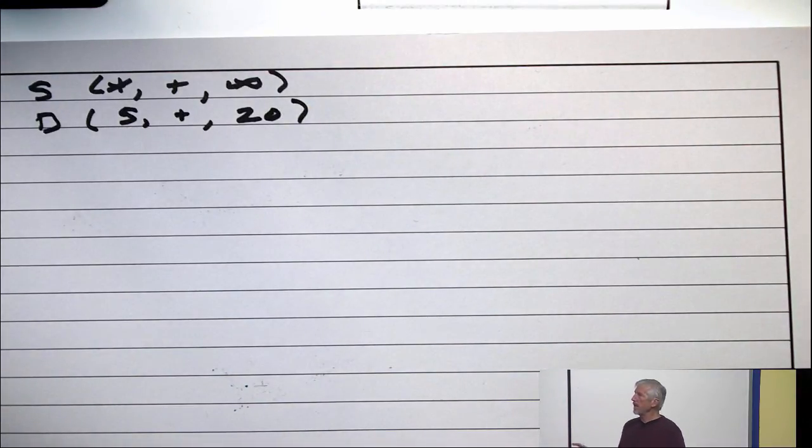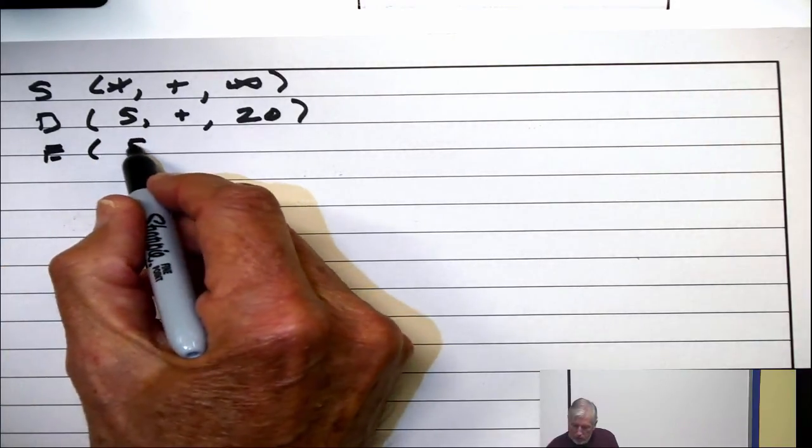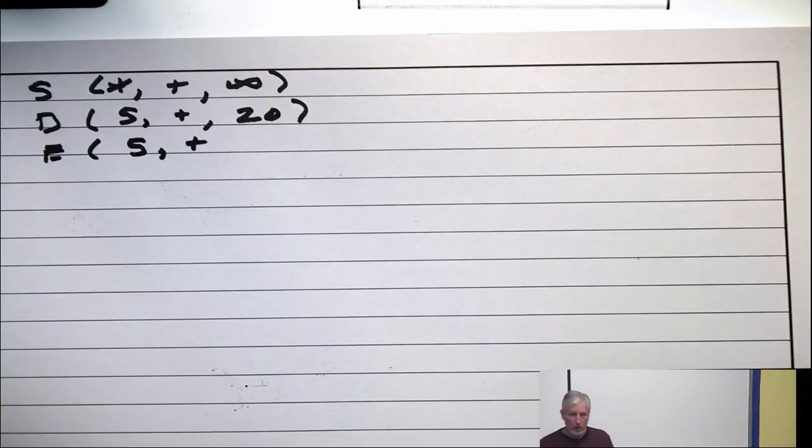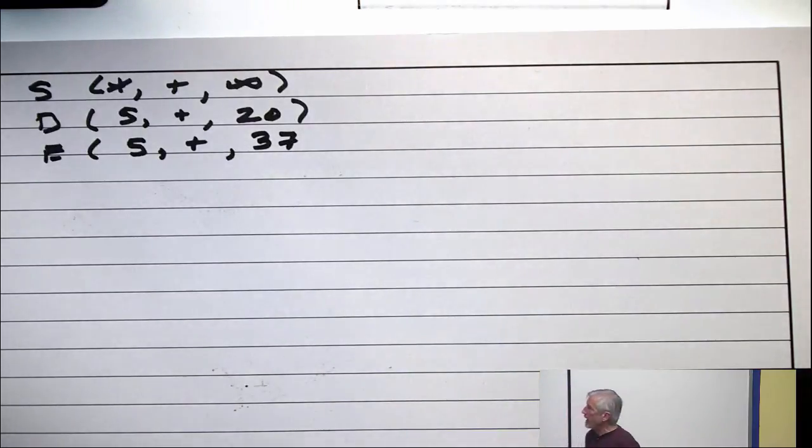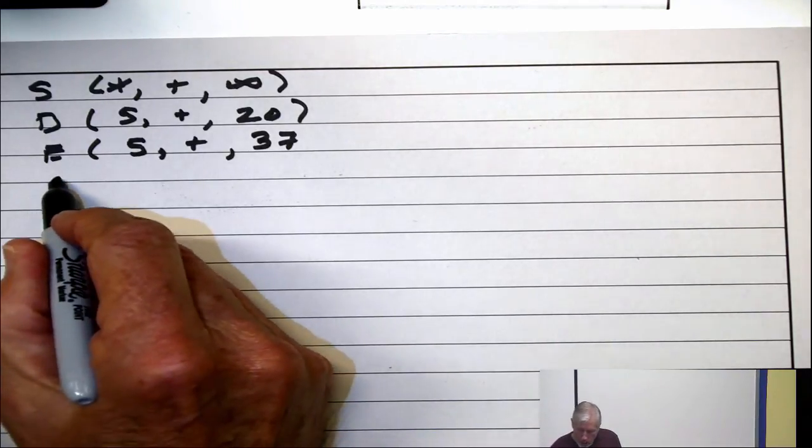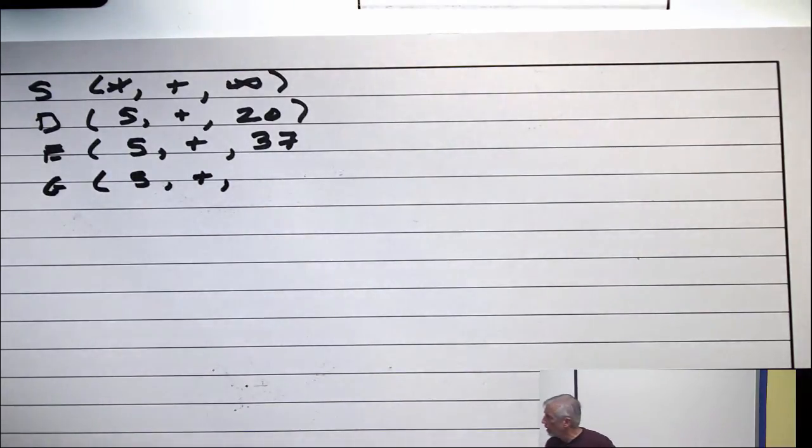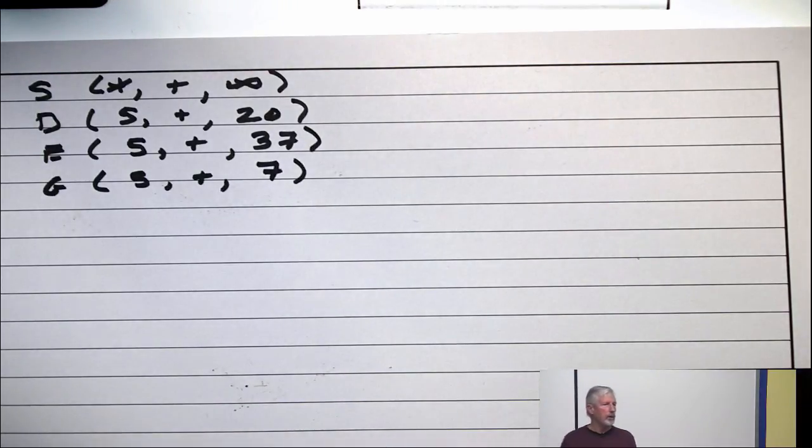Any arguments about that labeling? I continue my scan. S-E. Yes, E gets a label from S in the positive direction. And what's the amount? 37. All right, I keep scanning from S. I get down to G. So G also gets a label from S. And what's the amount? Seven. Any questions on those three labels?